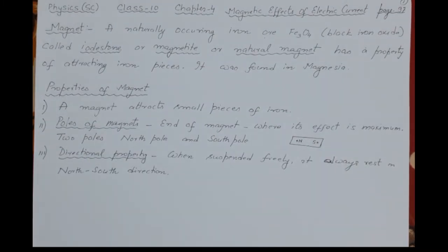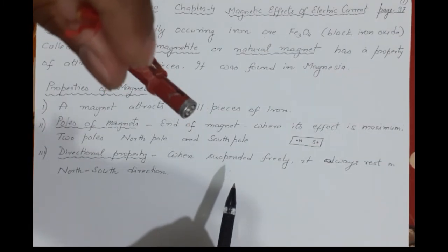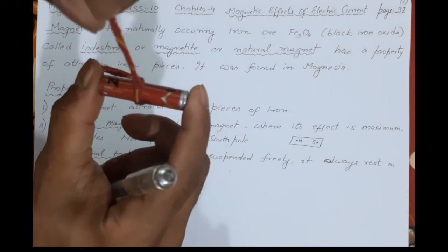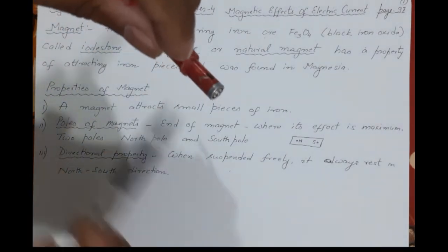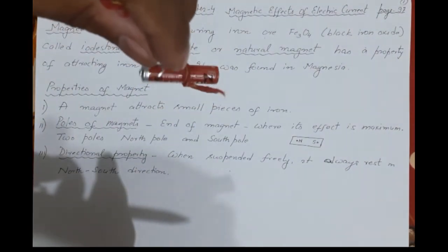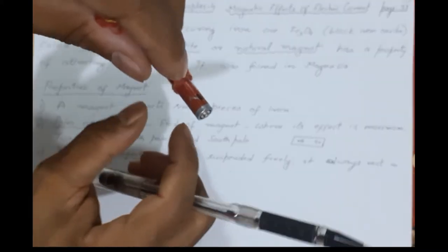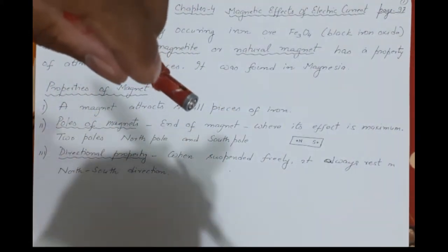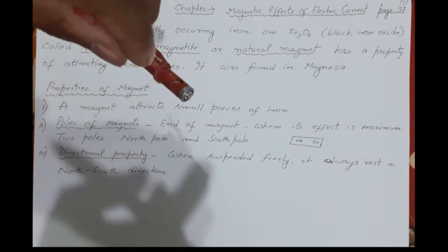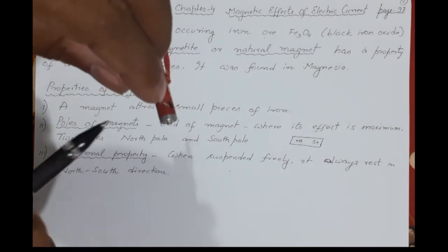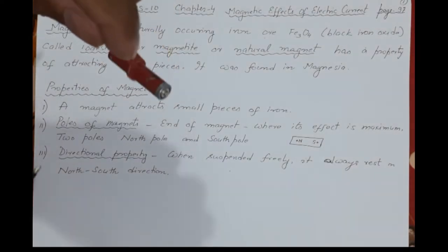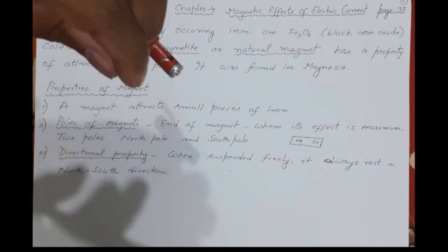The third property is the directional property. When you freely suspend a magnet — hang it so it can move freely — it will always come to rest aligned in the north-south direction of the Earth. Even if you disturb it, it will come back and align itself. This is how compasses work, used in journeys to find direction. The reason is that the Earth itself is a magnet.